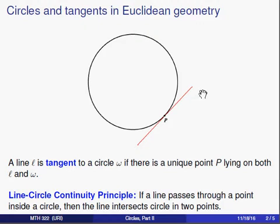We'll say that a line ℓ is tangent to a circle ω if there is a unique point P lying on both ℓ and ω.